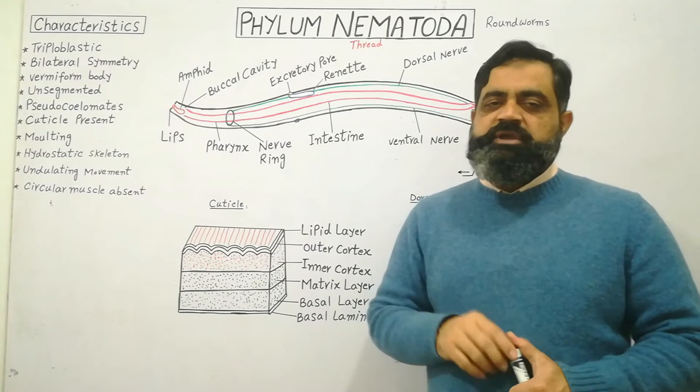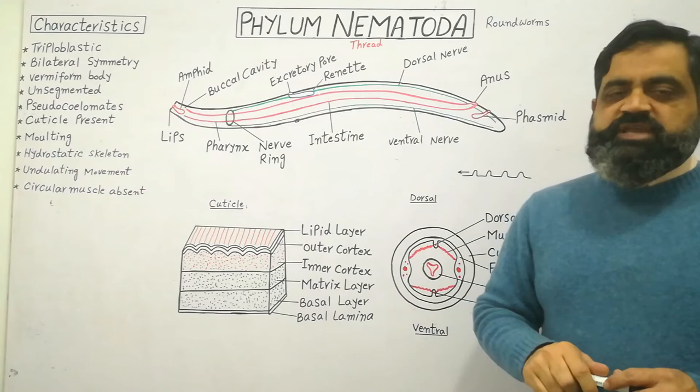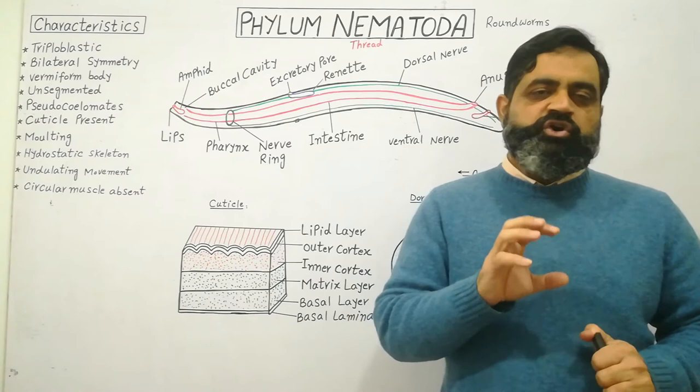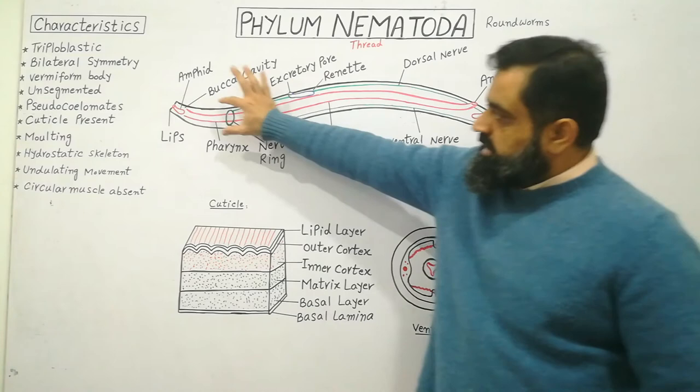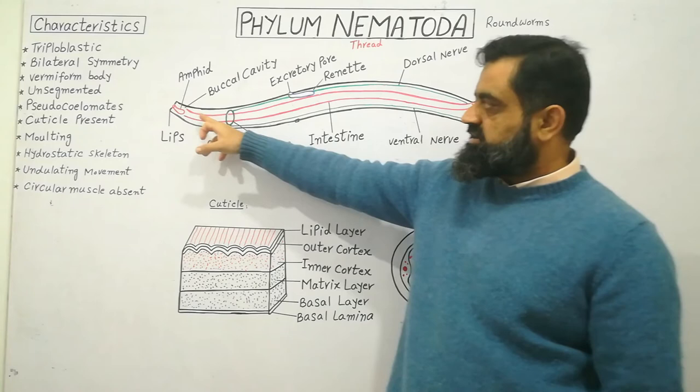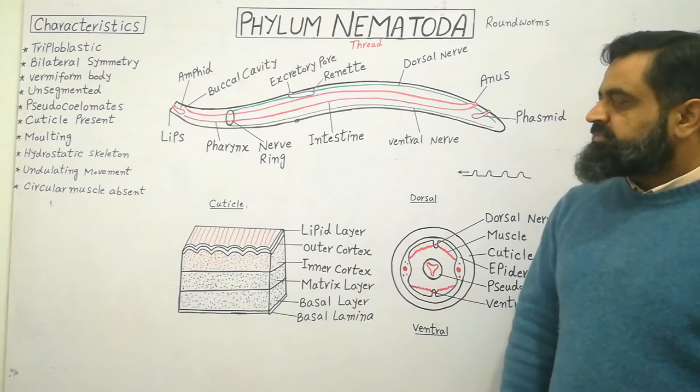Just beneath the cuticle there is a layer known as the epidermis, which forms the whole body of the animal. Their body is elongated and slender and acts like a tube within a tube. The outer black tube is the main body, and inside it there is another tube shown in red, which is the digestive system — a tube-within-tube arrangement.